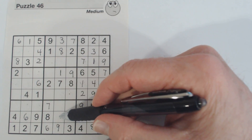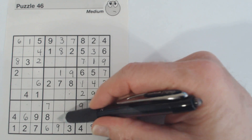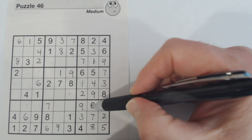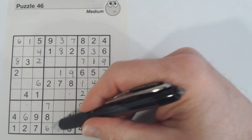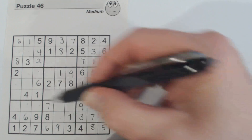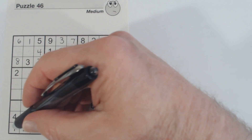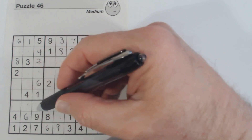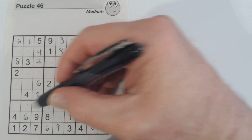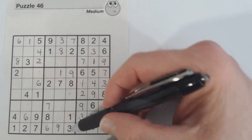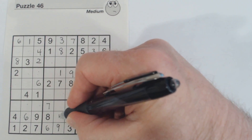We can find this one — it's a loaner cell with 9, 6, or 1 as possibilities, but they're all already placed in the row/column. Counting what's missing: 3, 5, and 8. There's a 3 and an 8 there, so that's a 5.